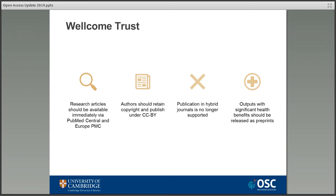In line with one of the major facets of Plan S, publishing in hybrid open access journals is no longer going to be supported by Wellcome Trust, and that's something that has already taken effect. Finally, where the output has a significant public health benefit — for example, a new medical treatment — the Trust say that a pre-print should be shared prior to peer review via an approved platform and under an open licence, to make sure that important and potentially life-saving research findings are accessible as soon as possible.